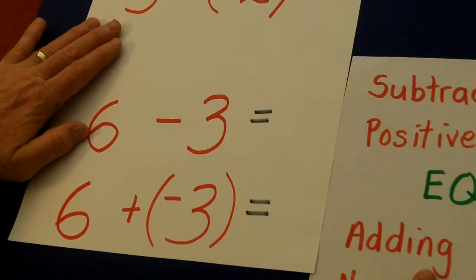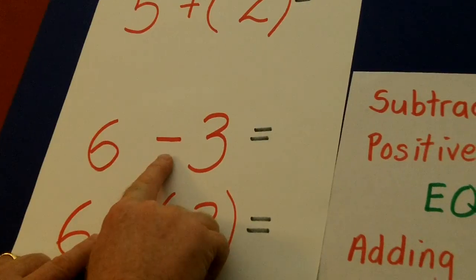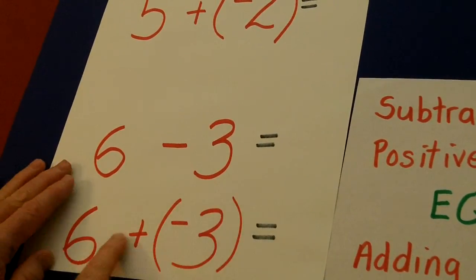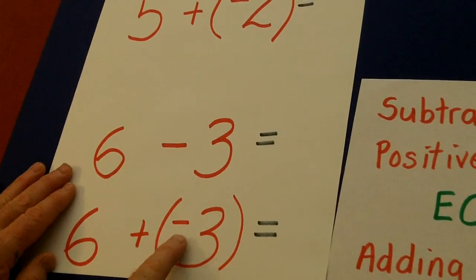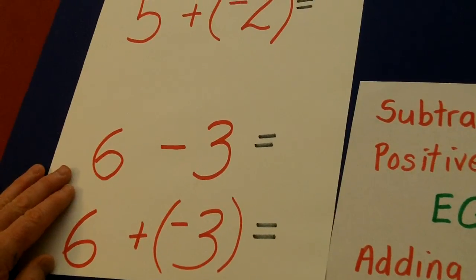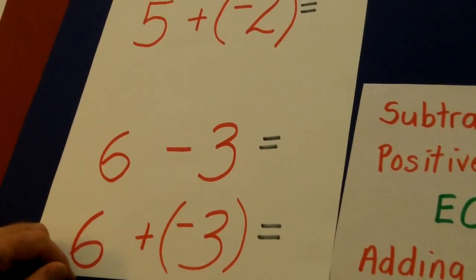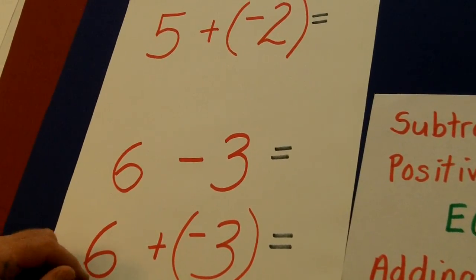Same thing right down here. 6 minus 3 is the same as 6 plus a negative 3. And if you can't understand it, at some point you're just going to have to memorize it.